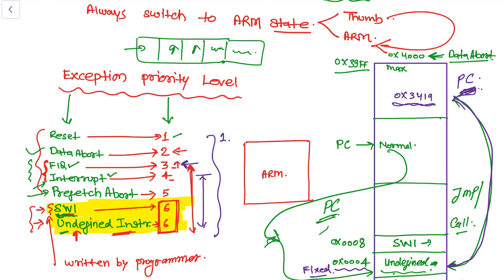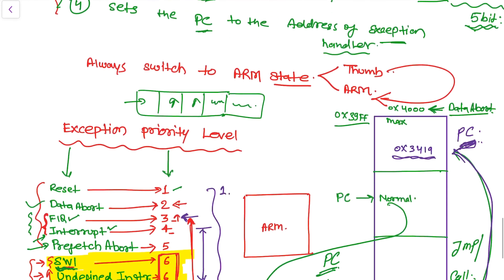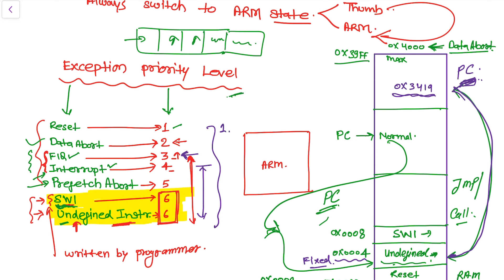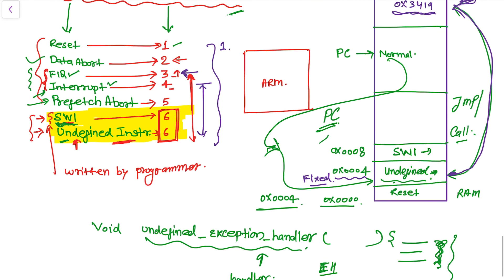In this lesson we learned about exception priority levels, how the processor prioritizes exceptions, the meaning of each exception, and how the program counter loads the exception service routine address via the vector table. The vector table address is always fixed, but the handler function address can be different. Please stay tuned, subscribe, and like the video to get updates directly to your inbox.